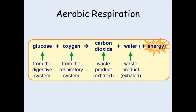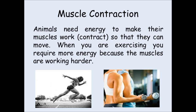So, once we've got this energy, what do we actually do with it? Well, the first use is muscle contraction. You need energy to be able to exercise because that energy is used to make the muscles contract. Whenever you're doing any sort of movement or exercise, some muscles are contracting. When you're exercising, your muscles are working a lot harder, so they need to respire more. That is why your heart rate and breathing rate increase — they're trying to get an increased supply of glucose and oxygen to your cells so that more energy can be produced.